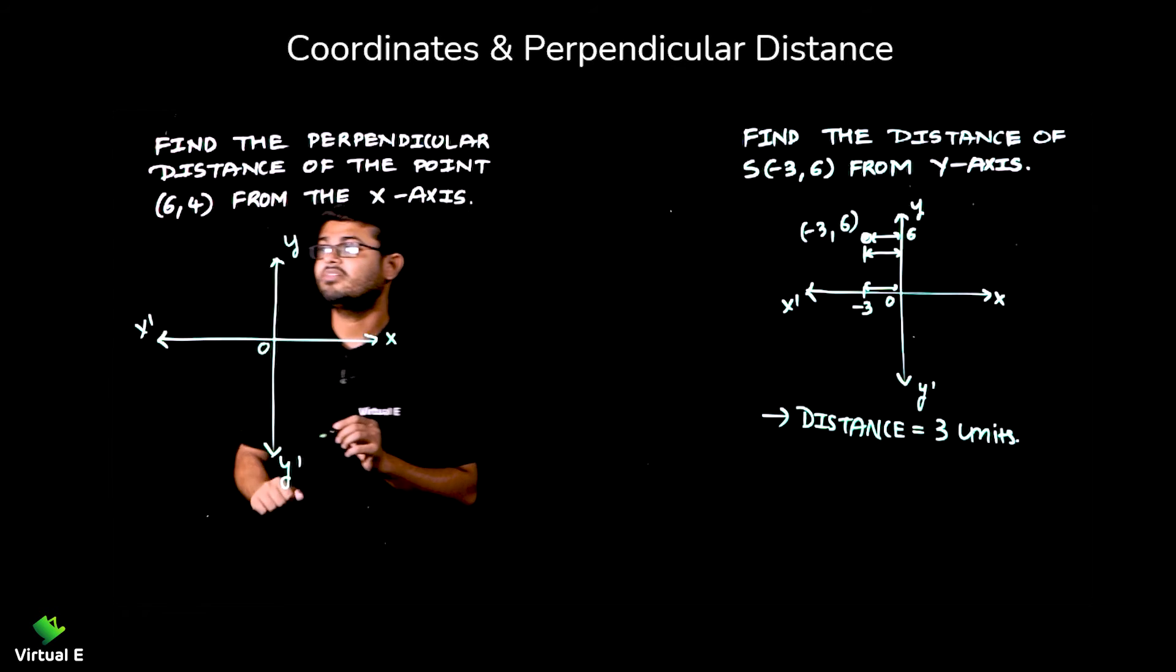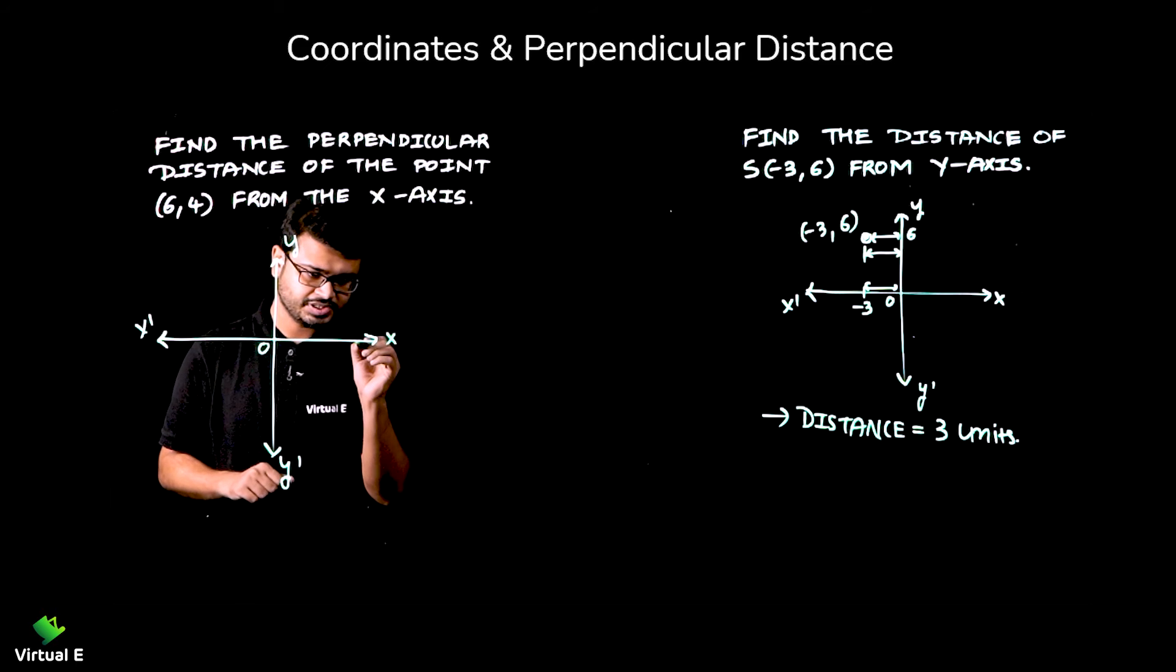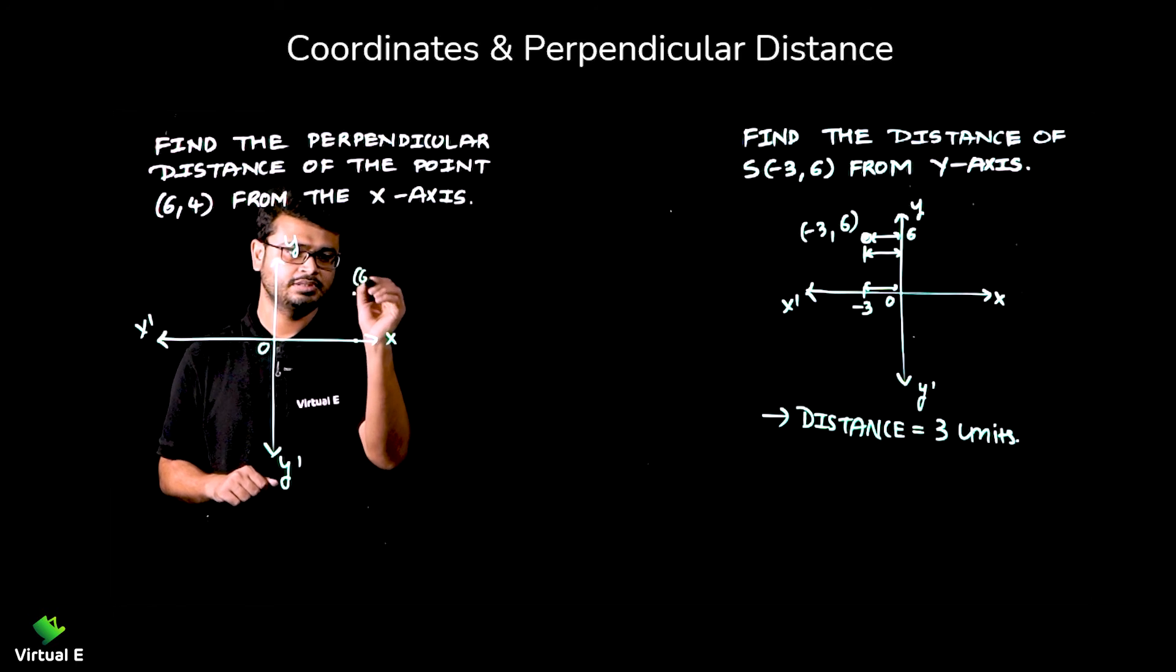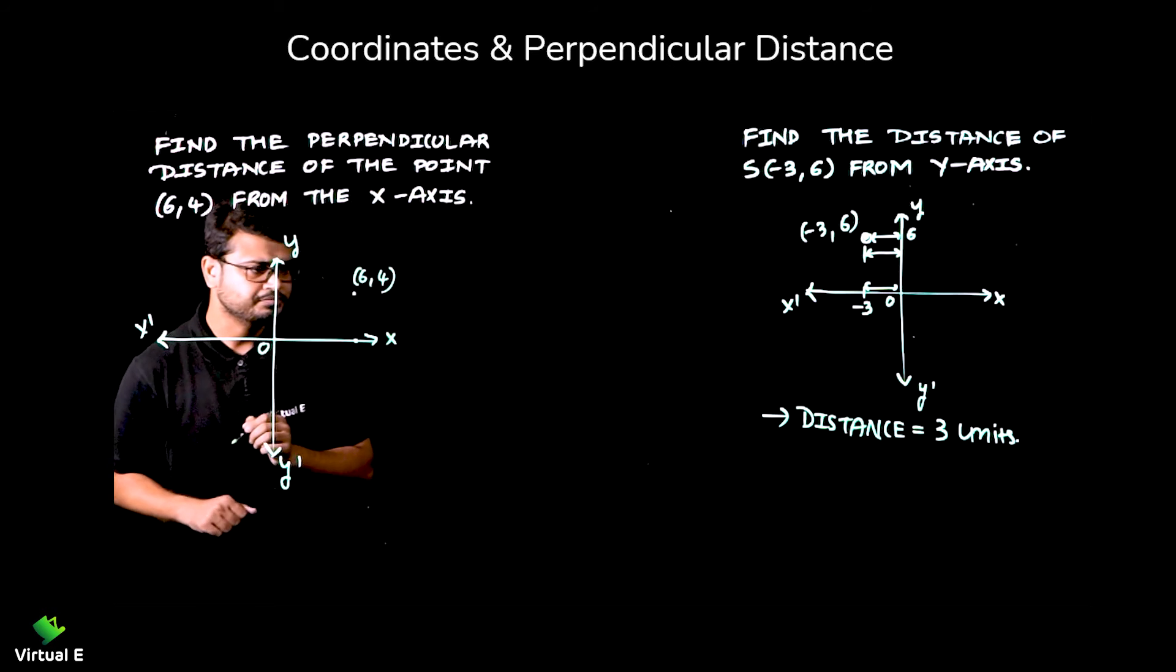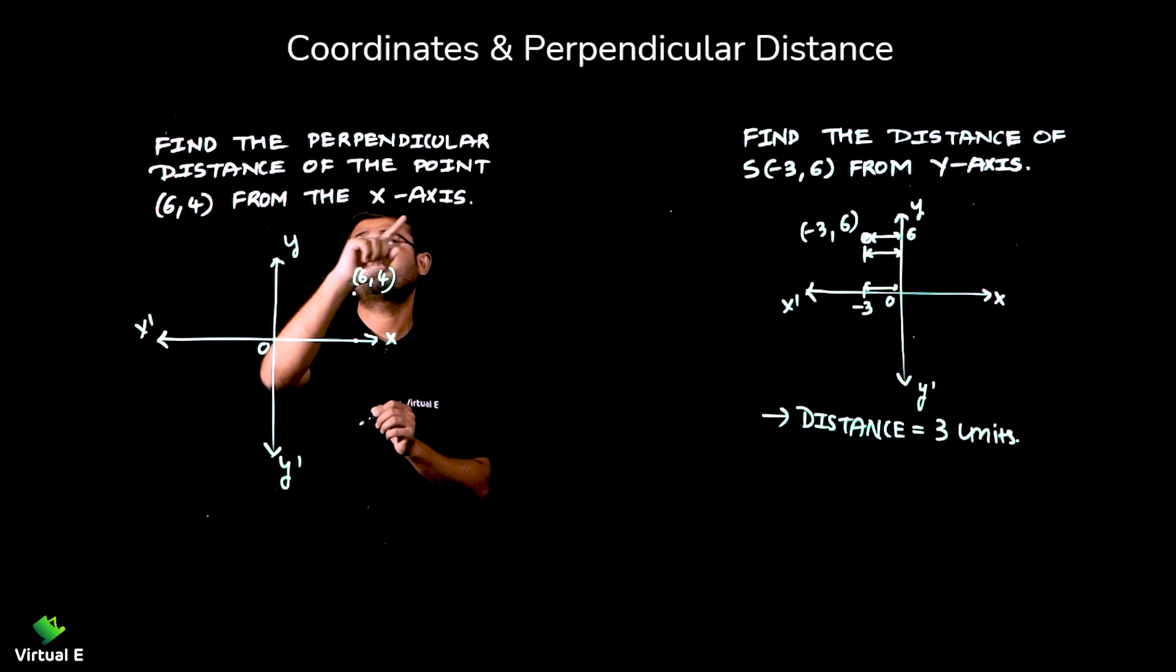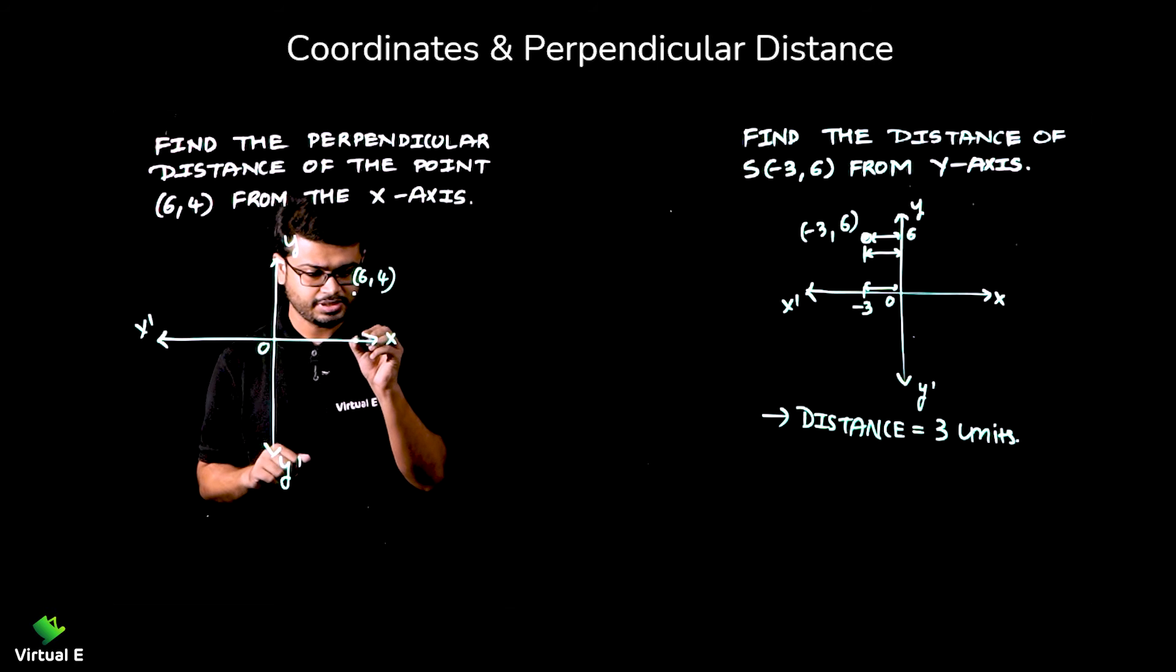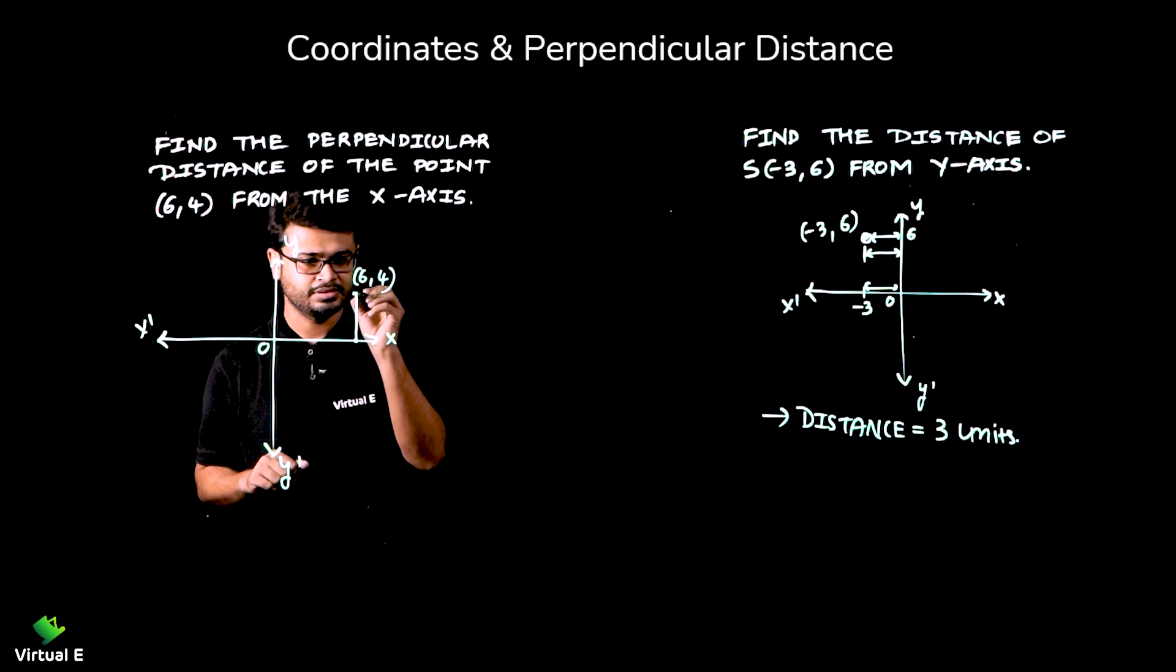Now, (6, 4) x-axis. Okay, somewhere 6 here and 4 that will go up. (6, 4). Now, perpendicular distance of the point from the x-axis. This distance we are interested in.